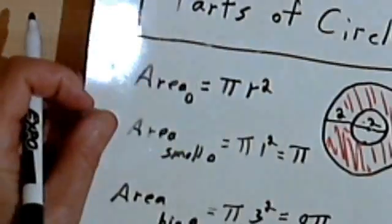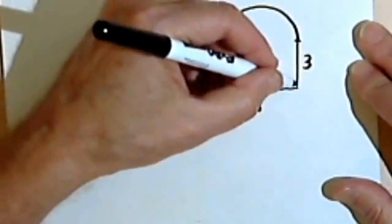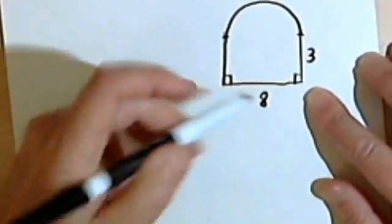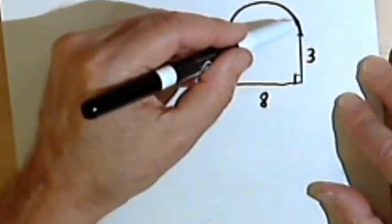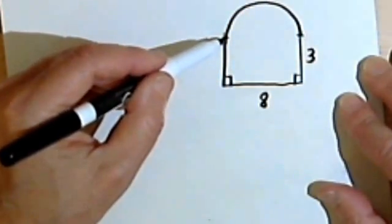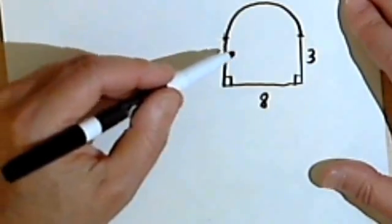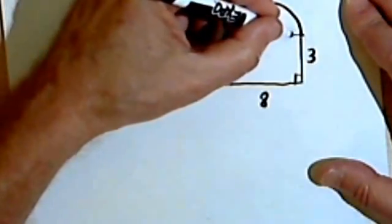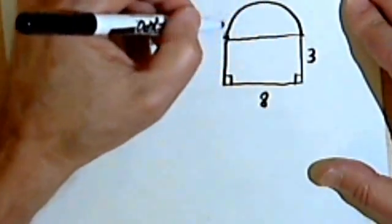Let's look at a different problem. We've got this shape with a square angle at each of the bottom angles. We've got a base here which is 8, it goes up 3 units, and then we've got this half circle on top of it. Let's find the area. We want to think of this as the sum of its parts — a rectangle and a half circle.